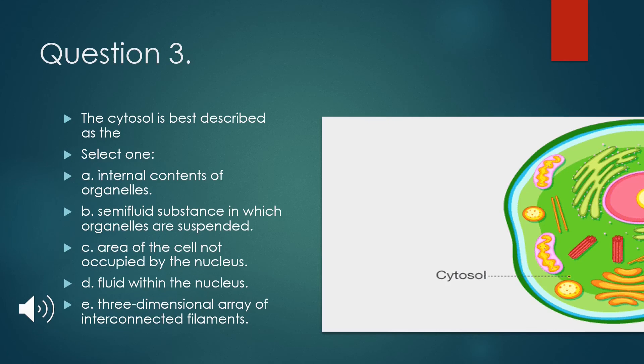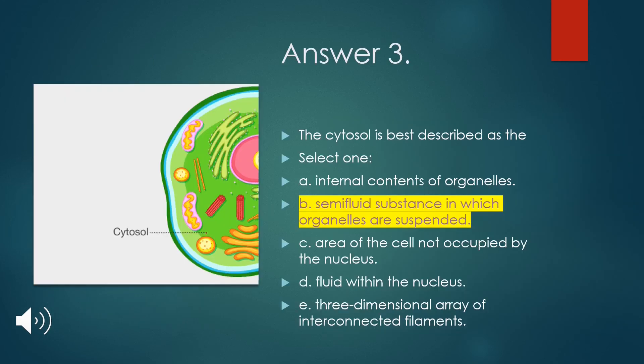Question 3: The cytosol is best described as: A. internal contents of organelles; B. semi-fluid substance in which organelles are suspended; C. area of the cell not occupied by the nucleus; D. fluid with nucleus; or E. three-dimensional array of interconnected filaments. The correct answer is B — semi-fluid substance in which organelles are suspended.